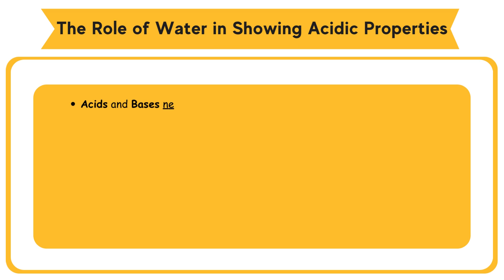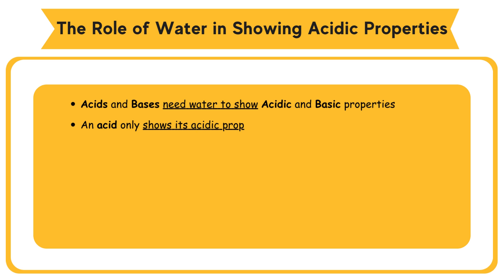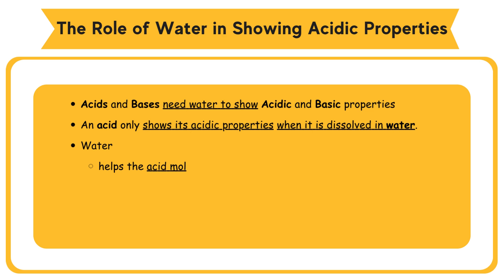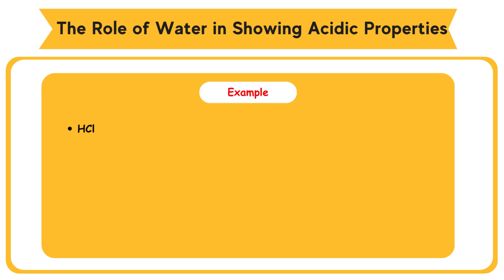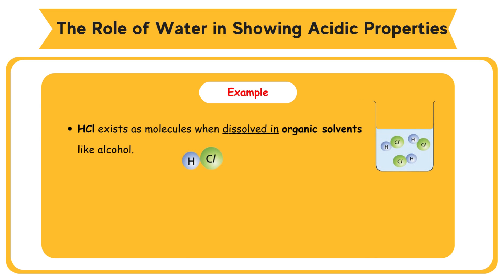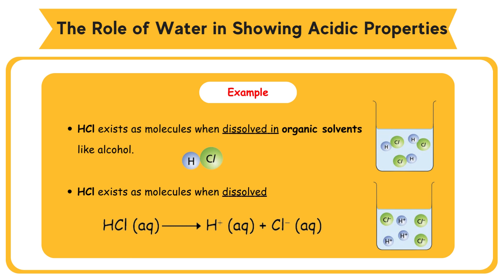Acids and bases need water to show acidic and basic properties. An acid only shows its acidic properties when it is dissolved in water. Water helps the acid molecules to ionize to produce hydrogen ions, which causes acidity. Without water, an acid won't show the properties of acid. Example: hydrochloric acid, HCl, exists as molecules when dissolved in organic solvents like alcohol. HCl dissociates into H+ and Cl⁻ when dissolved in water.